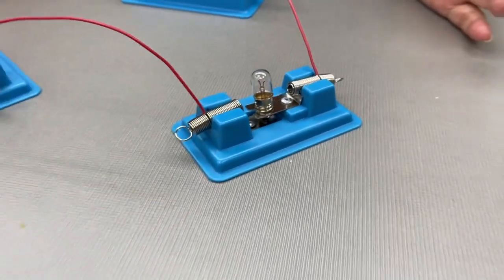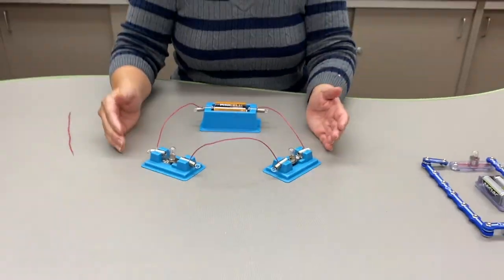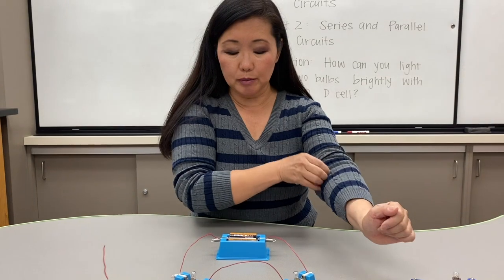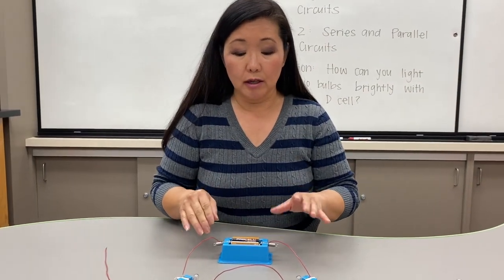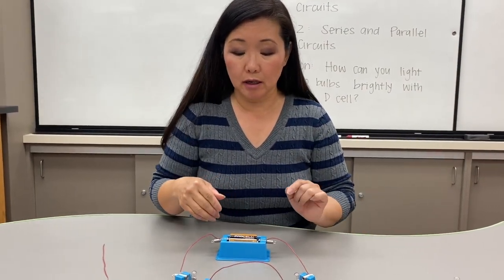So today's demonstration, we're going to look at how we can light these two light bulbs with just one D cell simply by rerouting our circuit.